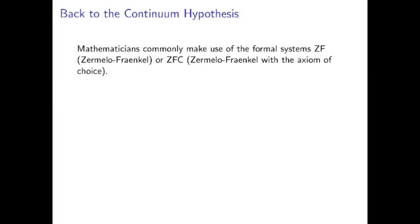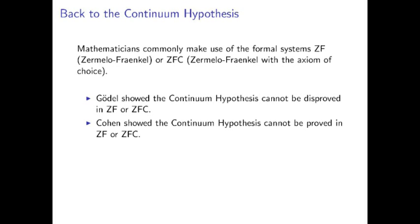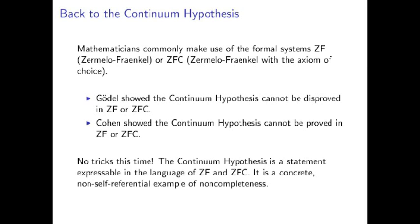Now, let's jump back to the continuum hypothesis. The standard formal system that most mathematicians work in is Zermelo-Fraenkel, ZF, or Zermelo-Fraenkel with the axiom of choice, ZFC. Now, Gödel himself showed that the continuum hypothesis cannot be disproved in ZF or ZFC. Paul Cohen, on the other hand, showed that the continuum hypothesis cannot be proved in ZF or ZFC. And there you have it.